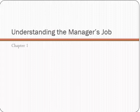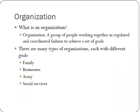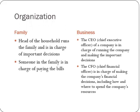Chapter one is understanding the manager's job — making sure we have an overview of what managers do and how they operate. A manager is involved in managing people under his or her level in an organization. An organization is any group of people working together in a regulated and coordinated fashion to achieve a set of goals: family, business, army, social services, charitable organization, non-profit, school. Virtually all types of organizations require some level of management.